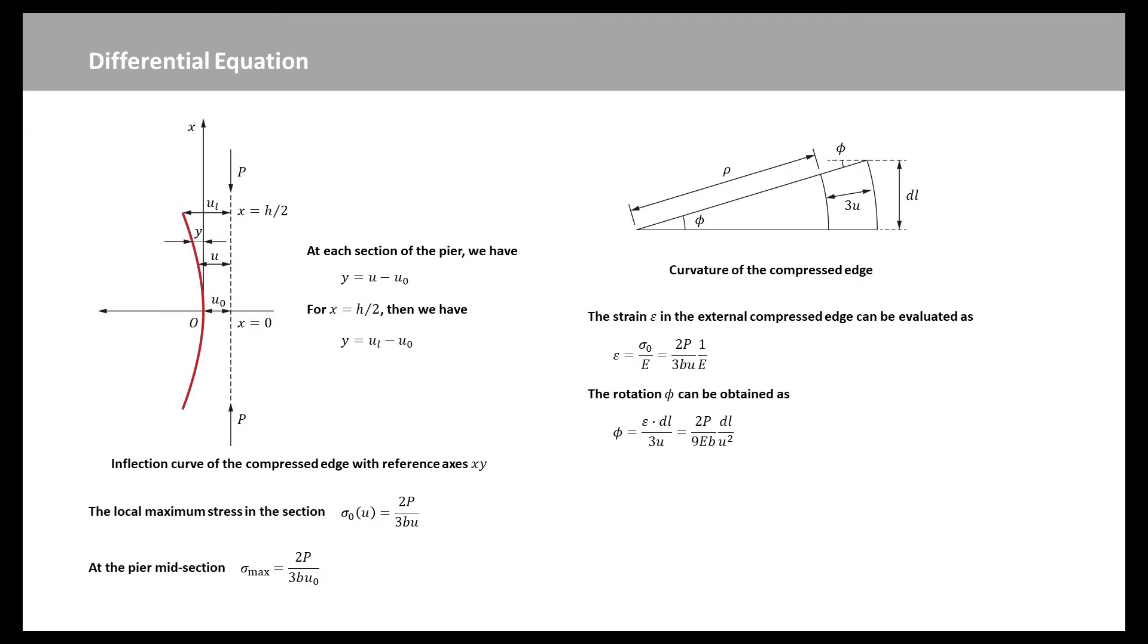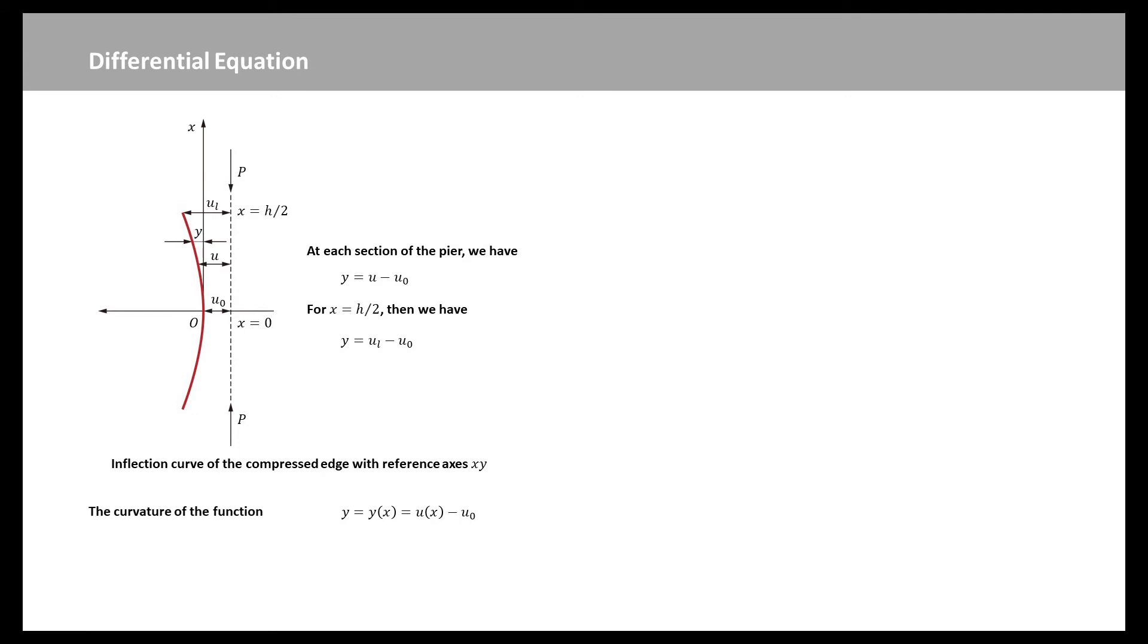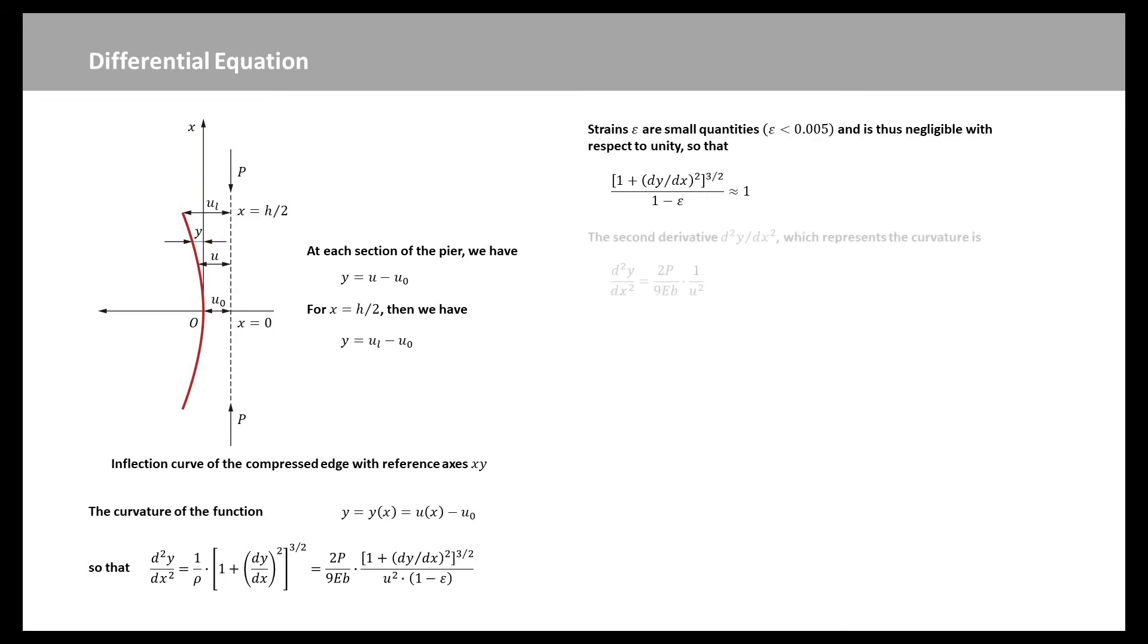This rotation phi can be obtained as this equation. The length of the compressed side of the element, equal to DL times 1 minus Epsilon, can be expressed in terms of the radius of curvature rho of the curved compressed edge as rho times phi equal to DL times 1 minus Epsilon. After simplification, we obtain this equation. Because the curvature of the function is Y equal to U(X) minus UO, then we can get the second order differential equation of Y. Strains Epsilon are very small, so that DY over DX is negligible with respect to unity. Thus, we can assume this relationship.